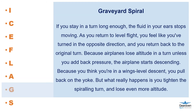The graveyard spiral can occur if you stay in a turn long enough — the fluid in your ears stops moving. As you return to level flight, you feel like you have turned in the opposite direction and you return back to the original turn. Because airplanes lose altitude in a turn unless you add back pressure, the airplane starts descending. Thinking you're in a wings-level descent, you pull back on the yoke, but what really happens is you tighten the spiral turn and lose even more altitude.